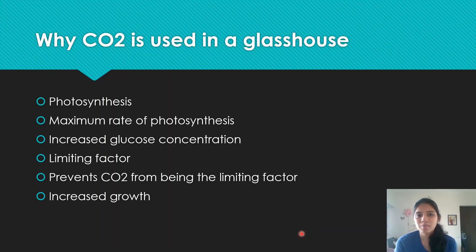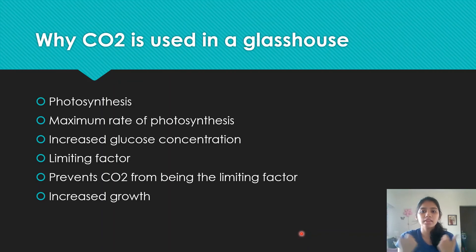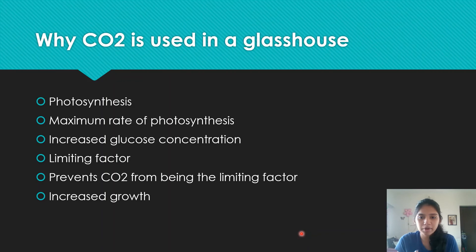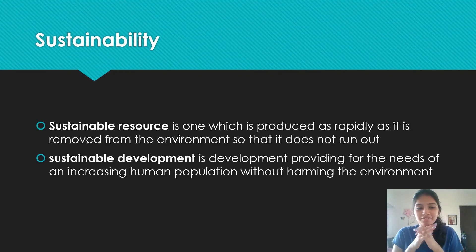Why is CO₂ used in a glasshouse — a mark scheme answer from a paper: it promotes photosynthesis since plants use CO₂; it maximizes the rate of photosynthesis; because of that, it causes increasing glucose concentration produced by plants, so an increasing crop yield; and it prevents CO₂ from being a limiting factor — using a surplus of CO₂ in a glasshouse prevents it from stunting plant growth, leading to increased glucose concentration and growth.